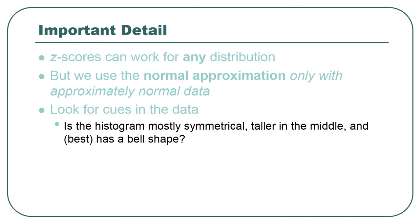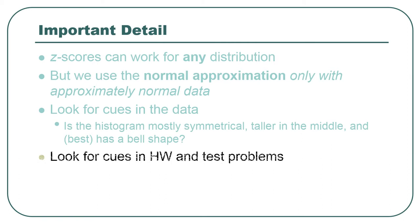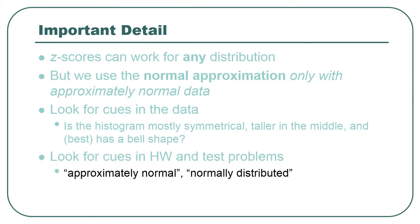Now if it's a homework problem, I'll be giving you cues to let you know that this is what you should be doing. I'll be saying approximately normal, normally distributed, nearly normal. And those are little cues that mean if you're supposed to figure out probabilities, go ahead and use the normal approximation to do that.